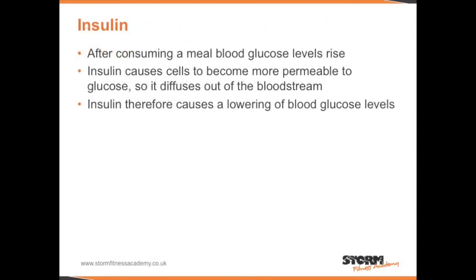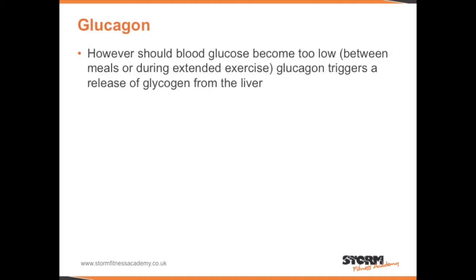Insulin: after consuming a meal, blood glucose levels rise. Insulin causes cells to become more permeable to glucose, so it diffuses out of the bloodstream. Insulin therefore causes a lowering of blood glucose levels. Glucagon: should blood glucose levels become too low — between meals or during extended exercise — glucagon triggers a release of glycogen from the liver.